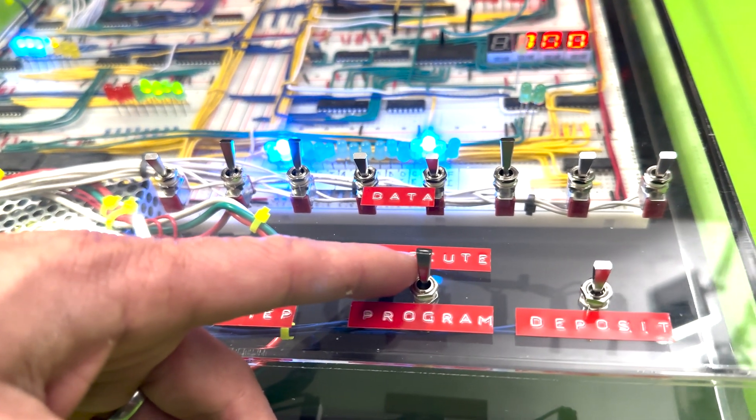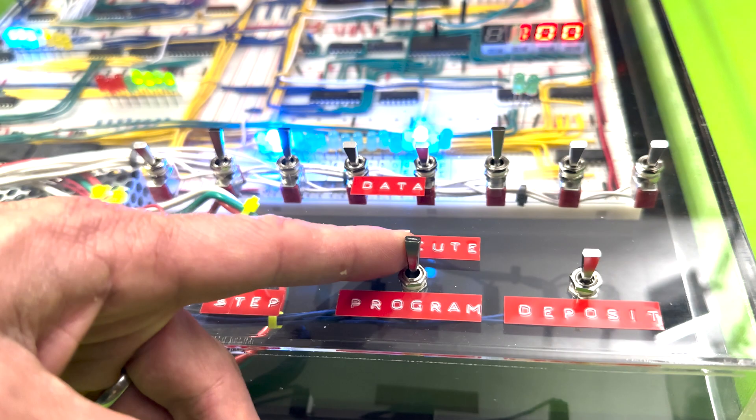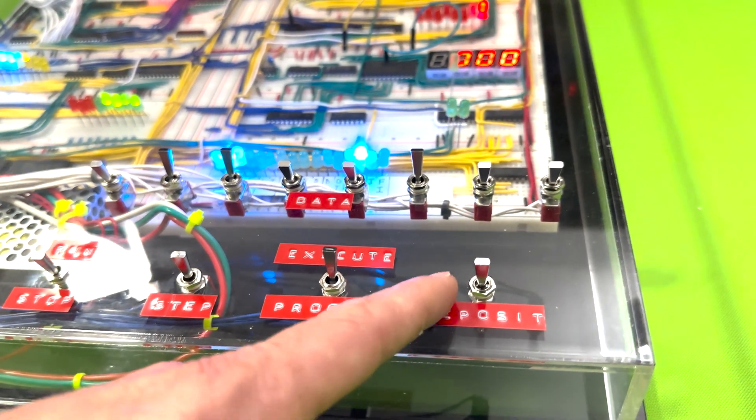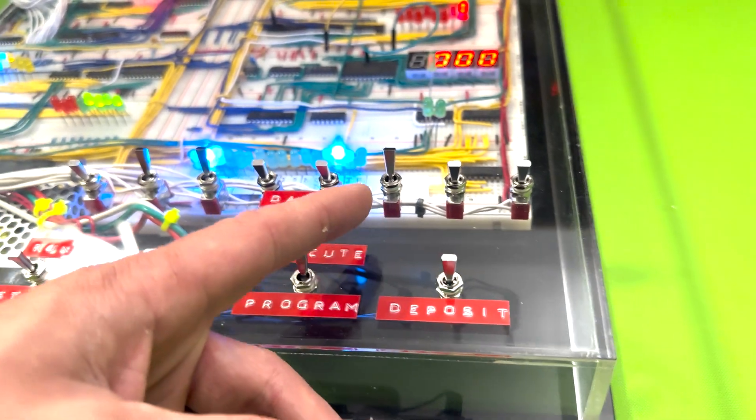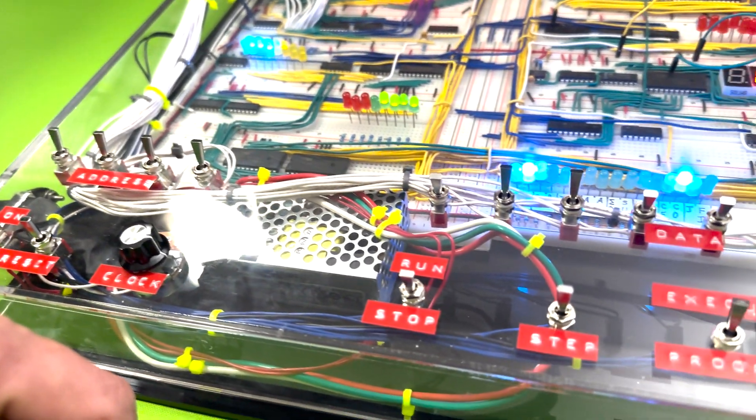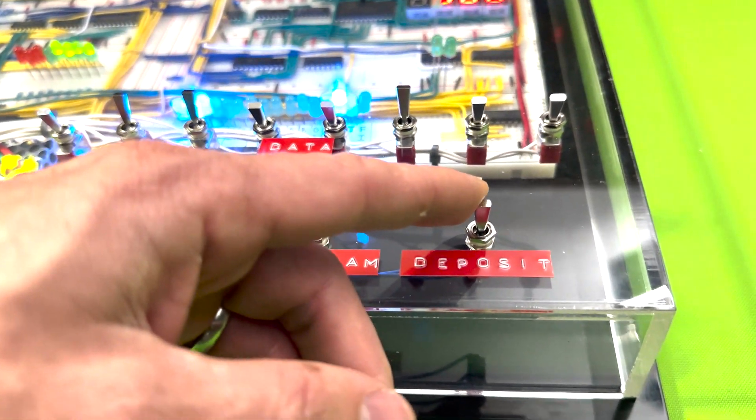This next lever is used to switch between execution mode and program mode. When program mode is enabled, the RAM address and data levers are used to set the address and values. Once the levers are set, the deposit lever can be toggled to persist the data in RAM.